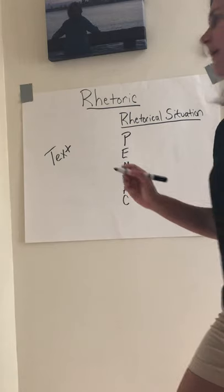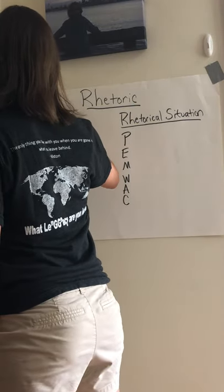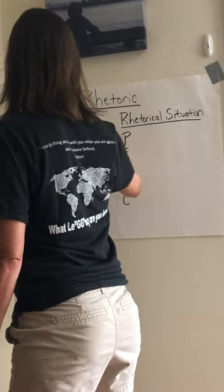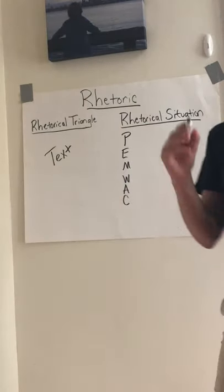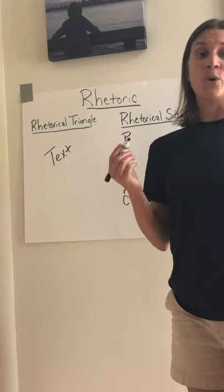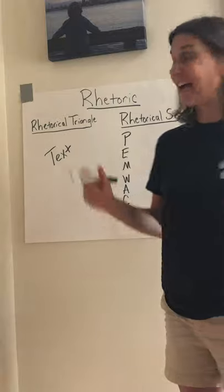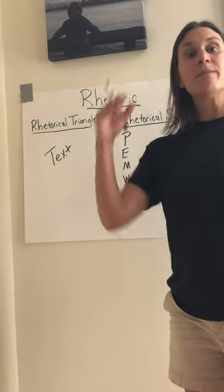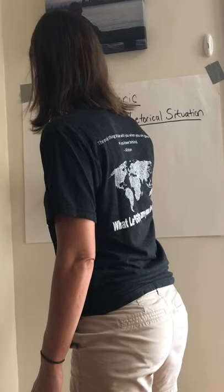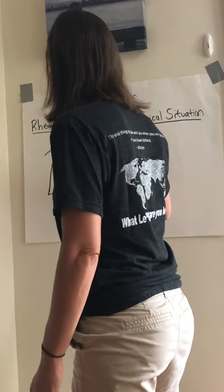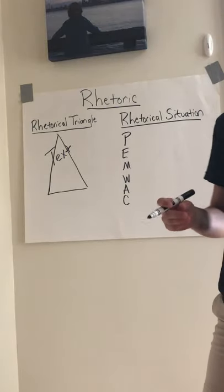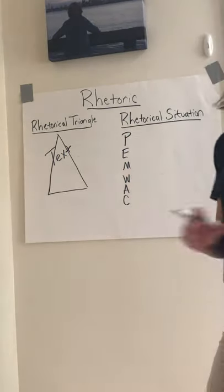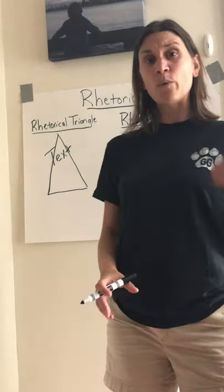PENWHACK is a nonsense word, but that's what we use to remember the rhetorical situation. We have the rhetorical situation, our text, and something known as the rhetorical triangle. I did not invent the rhetorical triangle — it's actually known as the Aristotelian triangle because Aristotle invented this idea. His idea was that when you argue, you can think about argument in terms of three main points, which makes it a triangle. The text fits inside the triangle.